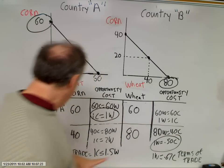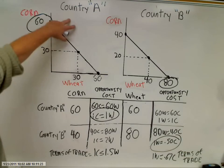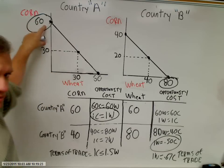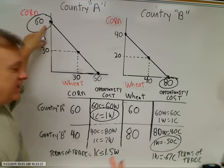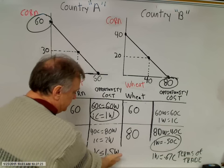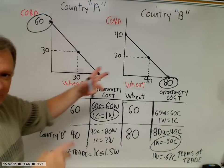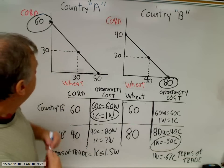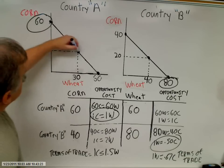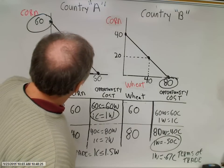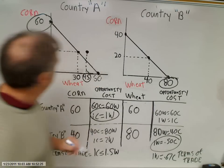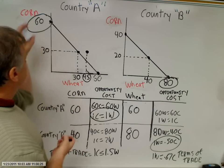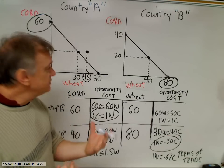Let's see how this works. Terms of trade: one corn for 1.5 wheat. Country A still wants to consume 30 bushels of corn domestically, but since they don't produce wheat anymore, they take their surplus — 30 bushels of corn — and sell them to country B at the established terms of trade. Thirty bushels of corn times 1.5 wheat equals 45 bushels of wheat. So country A consumes 30 bushels of corn and 45 bushels of wheat — they are absolutely better off.